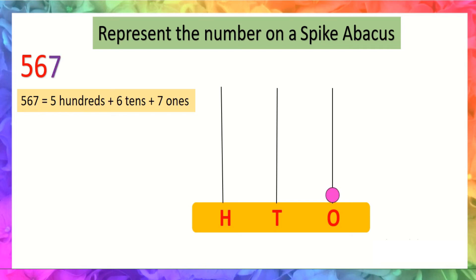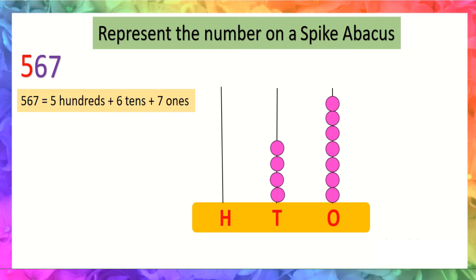Drawing beads for ones place: one, two, three, four, five, six, seven. At tens place the digit is six, so we will draw six beads: one, two, three, four, five, six.